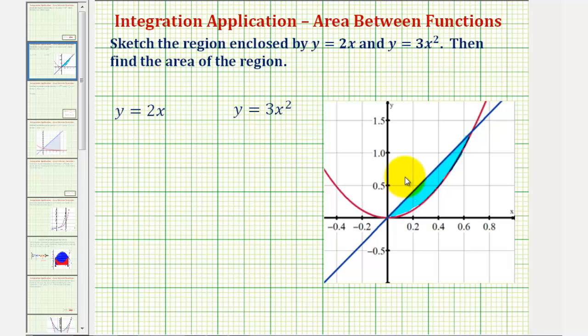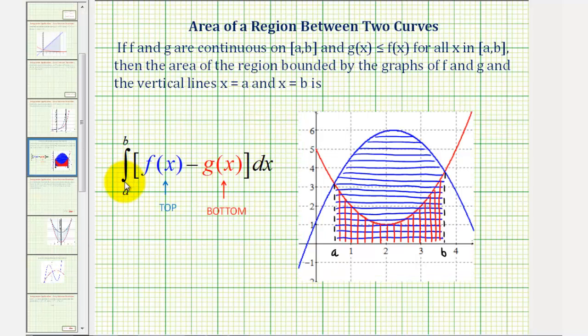When determining the area between two functions, we want to find the integral of f of x minus g of x from a to b, where f of x would be the top function and g of x would be the bottom function, and a and b would be the x coordinates of the points of intersection.